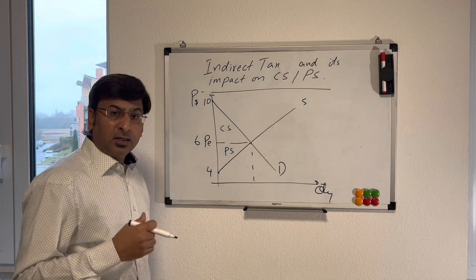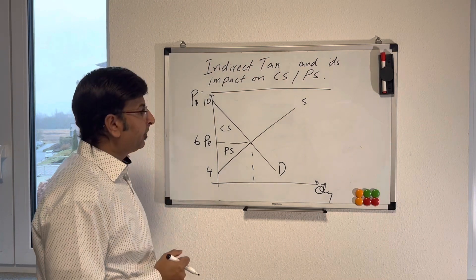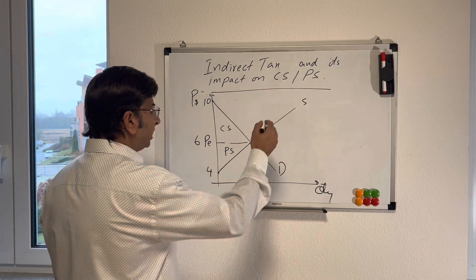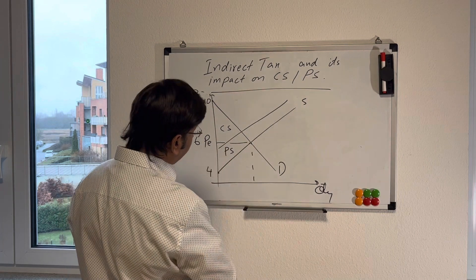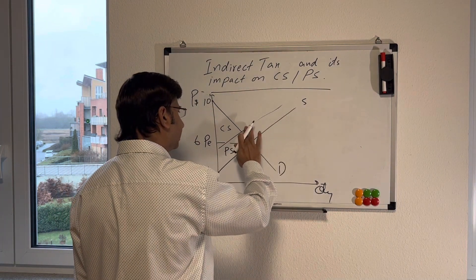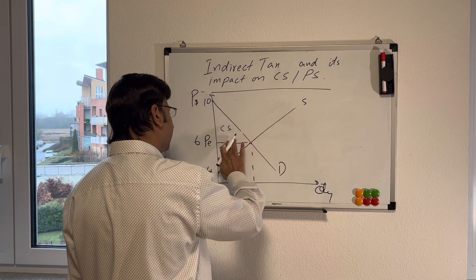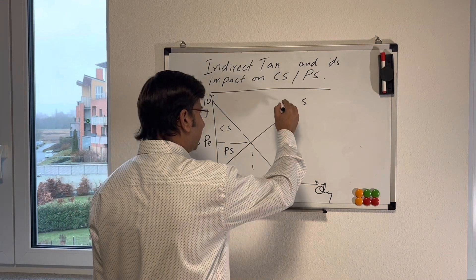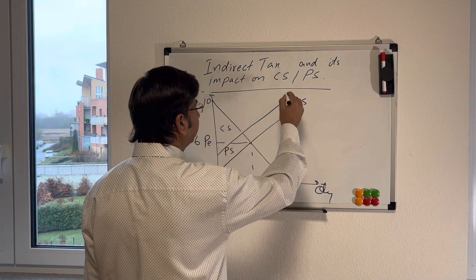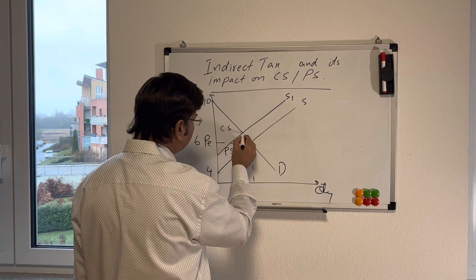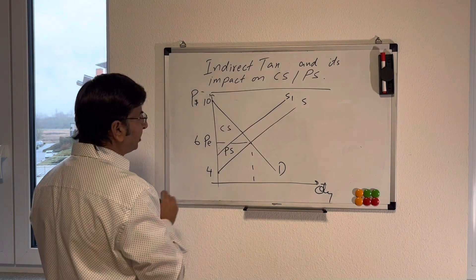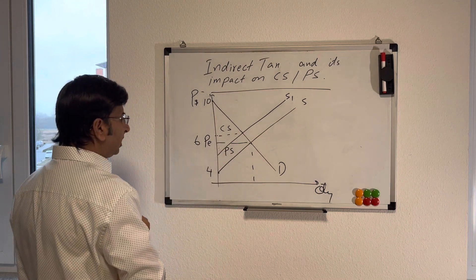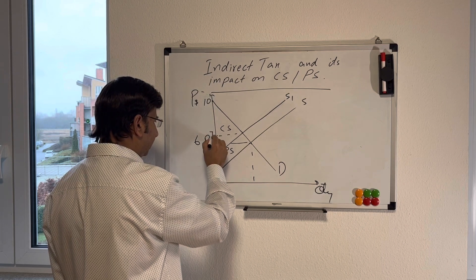Let's assume an indirect tax of $2 which causes the supply curve to shift upward to the left. And I have to redraw this as I want to show you an impact of specific tax, not the ad valorem tax. So specific tax will cause a parallel shift in supply curve. Some adjustment needed now. After the increase in tax, the new price is going to be let's say $7.